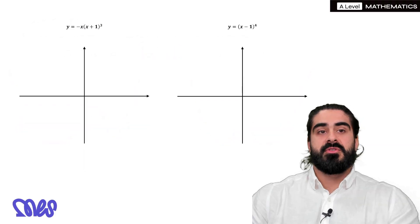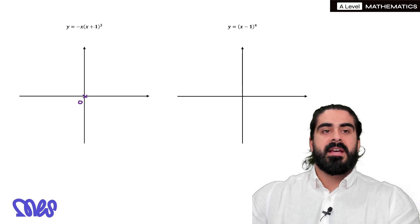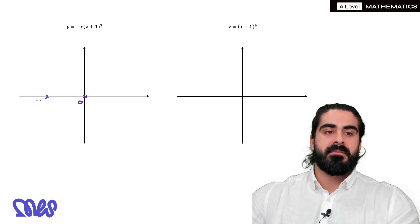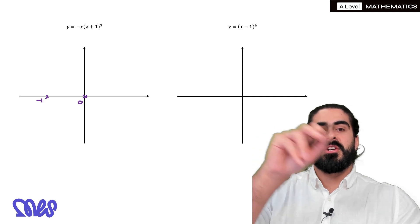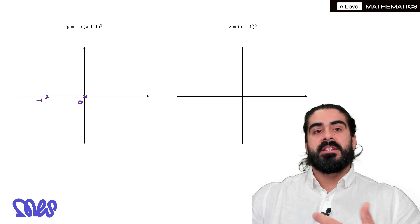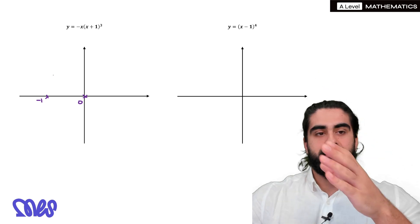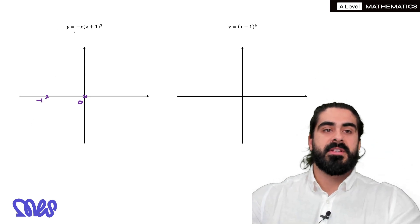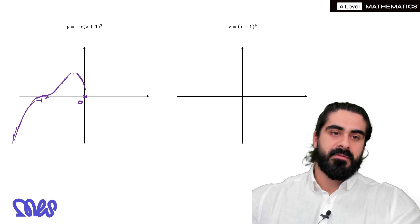Minus x times x plus 1 cubed. The x means it's going to go through 0, and x plus 1 means minus 1. Interestingly, what do cubed roots look like? We know squared means it touches the axes. Cubed — you can think of it as it looks like the cubic graph at that point. Positive quartics come down, but because there's a minus on the outside we're going to come from the bottom. It's going to go flat at minus 1, making that cubic shape, but then it has to turn and go through 0.